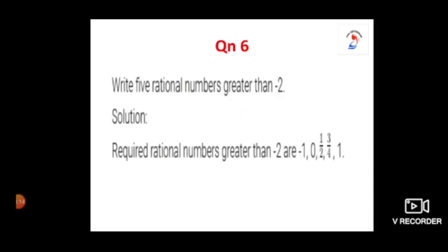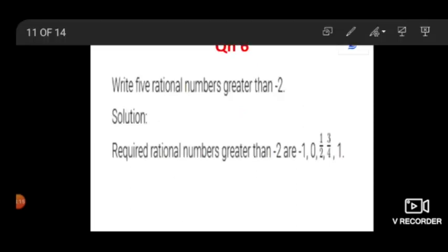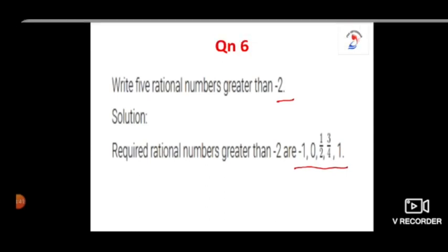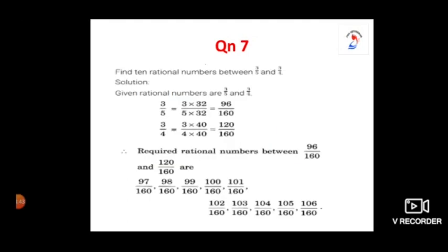Next is question number 6. We have discussed a similar problem in the same exercise. Here it is: write 5 rational numbers greater than minus 2. We need to write 5 rational numbers which are greater than minus 2. The required rational numbers greater than minus 2 are: minus 1, 0, 1 by 2, 3 by 4, and 1.